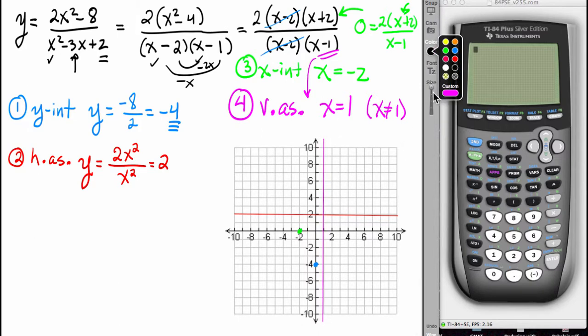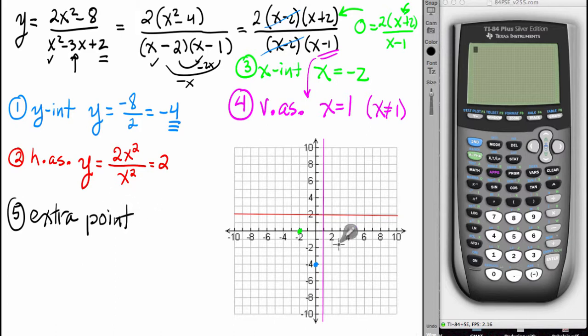All right, fifth feature, an extra point. So fifth, an extra point. And I'm thinking that an extra point at perhaps x equaling 3 will be a good idea.